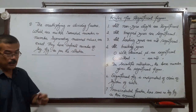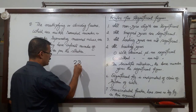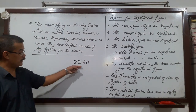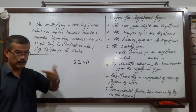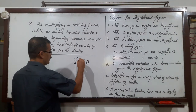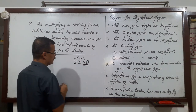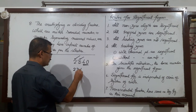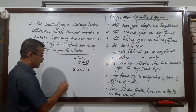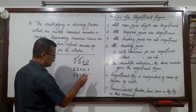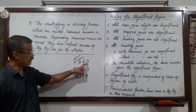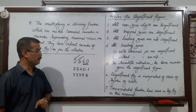A significant figure is determined by the measure. For example, a measure of 2, 3, 4, 0 — measure of 1, 0, 0 — measure of 1, 0, 0, 0 — measure of 2, 3, 4, 0, 0 — measure of 1, 0, 0, 0, 0. Any number of digits, certain reliable digits plus uncertain digits give us the total number of significant figures.